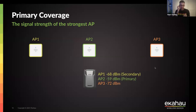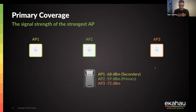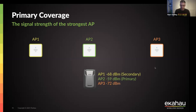Another term we talk about in Wi-Fi all the time is primary coverage, or Received Signal Strength Indicator. When you're looking at heat maps in Ekahau — whether a design file or validation file — what we're looking at is effectively the signal strength from the strongest access point. In this example we've got three access points: AP1, AP2, and AP3. The Sidekick hears them at minus 68, minus 59, and minus 72 dBm respectively. The strongest signal, closest to zero, is AP2 at minus 59 dBm. That's the primary signal.